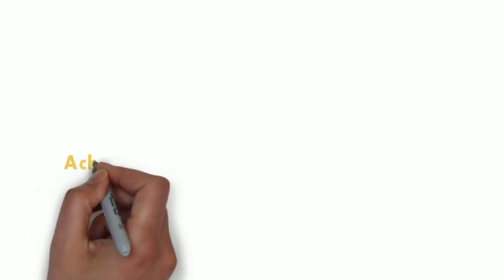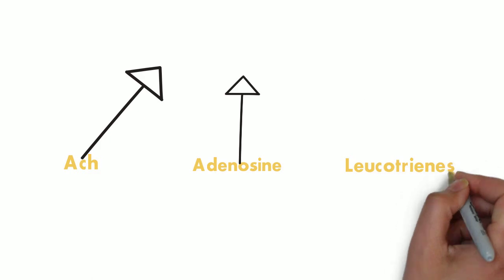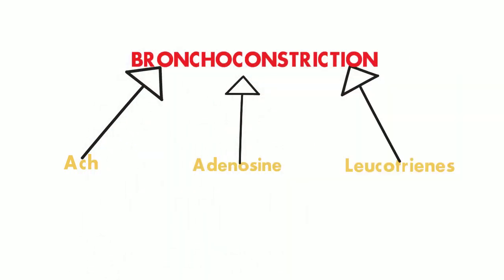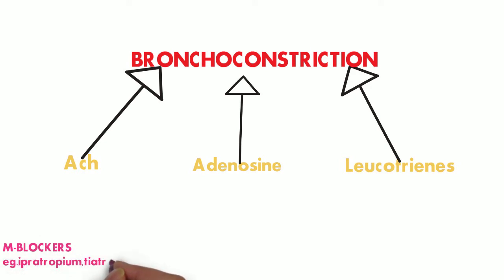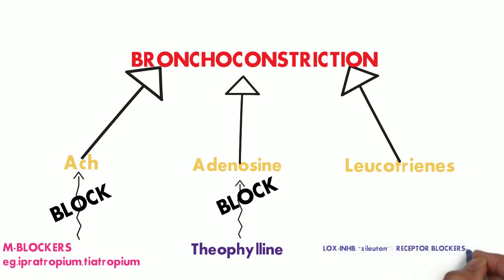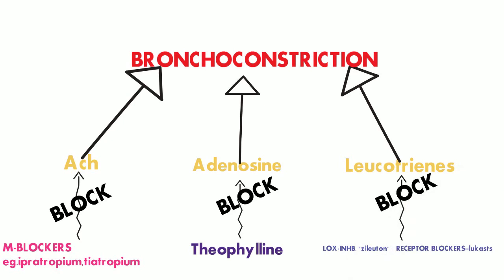Now coming to the second line of management, that is reversing the bronchoconstriction. There are three molecules which cause bronchoconstriction: one is acetylcholine, then adenosine, and leukotrienes. We have to individually block these molecules so as to reverse the bronchoconstriction and cause bronchodilation. The muscarinic blockers like ipratropium and tiotropium block acetylcholine. Adenosine is blocked by theophylline, and the leukotrienes are blocked by two classes of drugs: one is the LOX inhibitors, that is the lipoxygenase inhibitors, and the other are the receptor blockers.